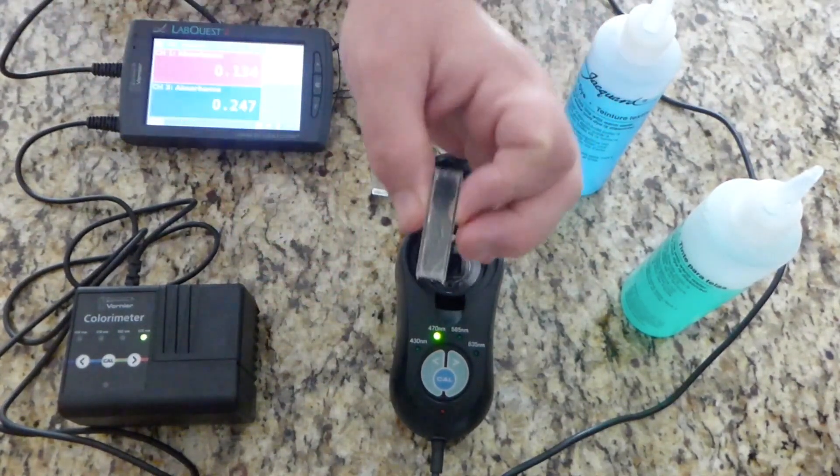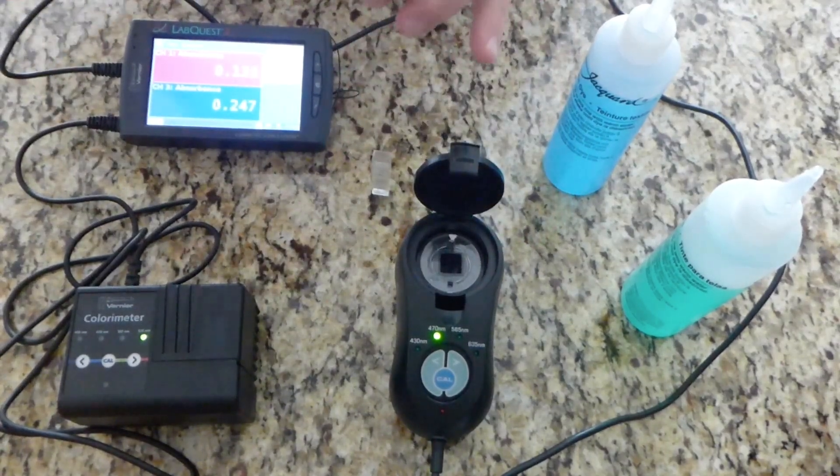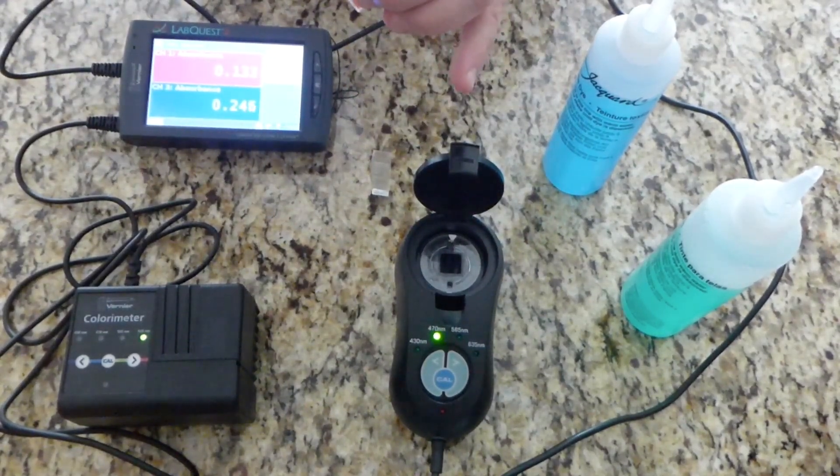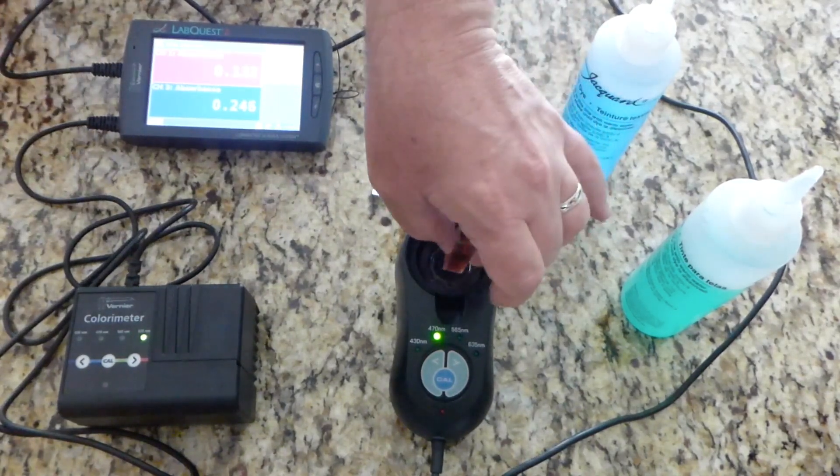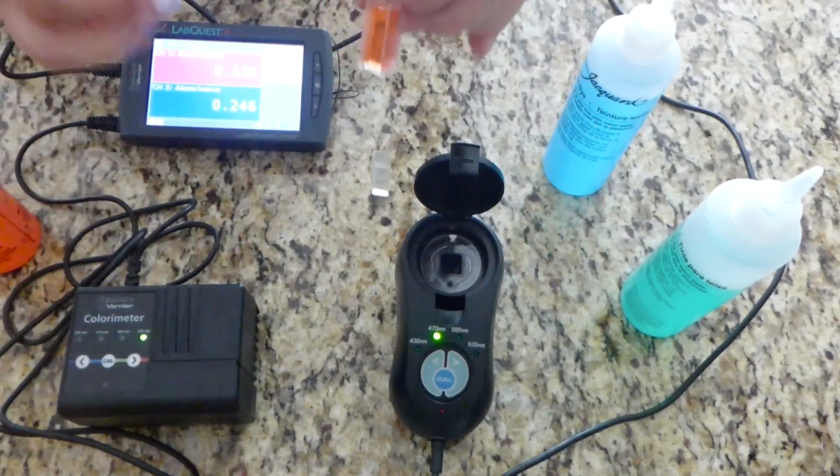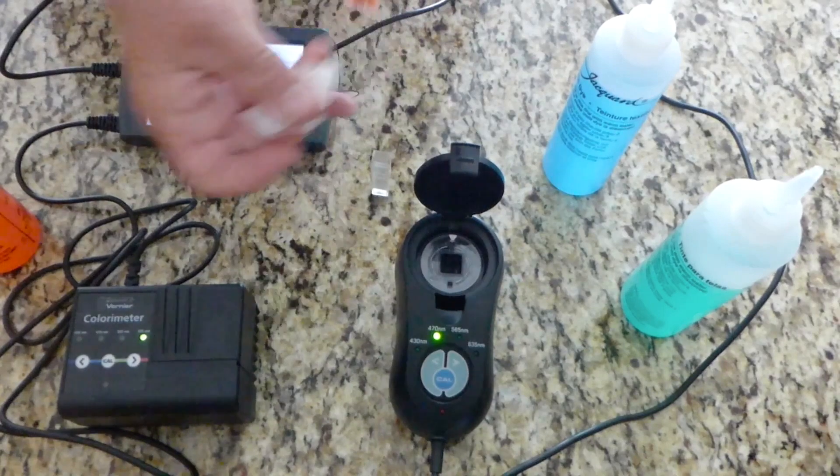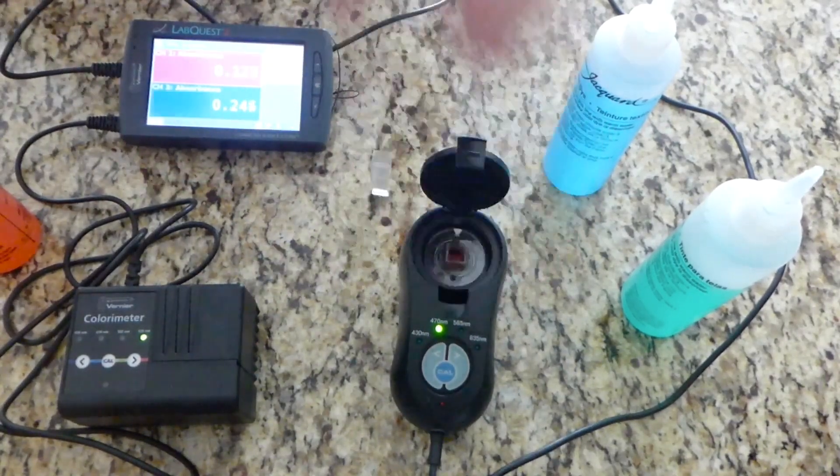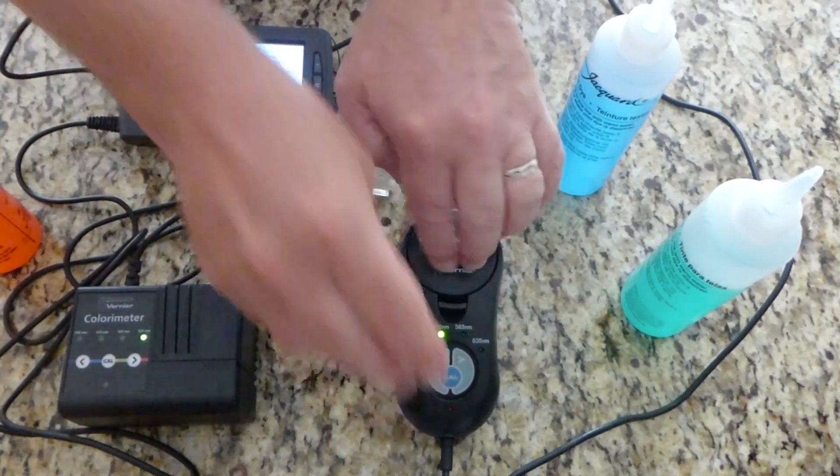Here's a red solution. I'm going to pour it in the cuvette. Make sure that it's aligned in the correct way. Wipe it off, then align it in the correct way. Close the lid and take a reading at this new wavelength.